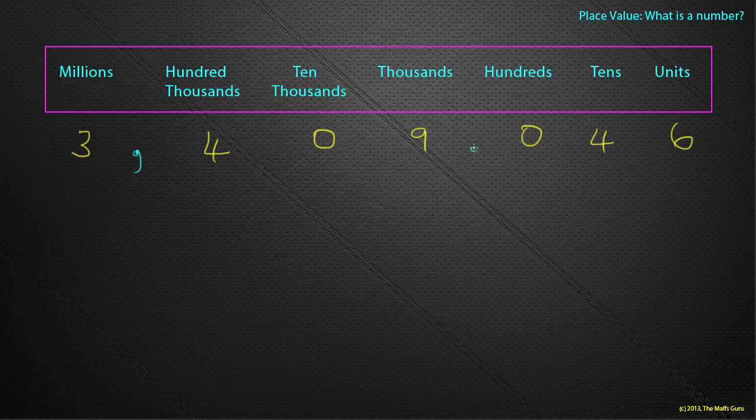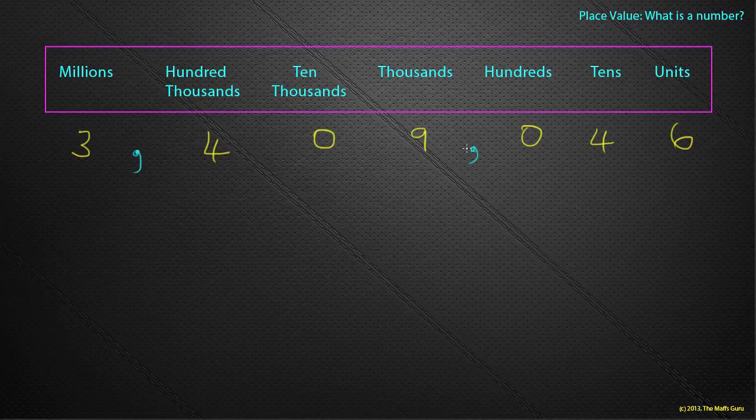Well, let's put in the commas first to try and help us. I'm going to put a comma here and a comma here. Remember, after each three numbers. From the start, three numbers, put a comma. Three numbers, put a comma. Right.